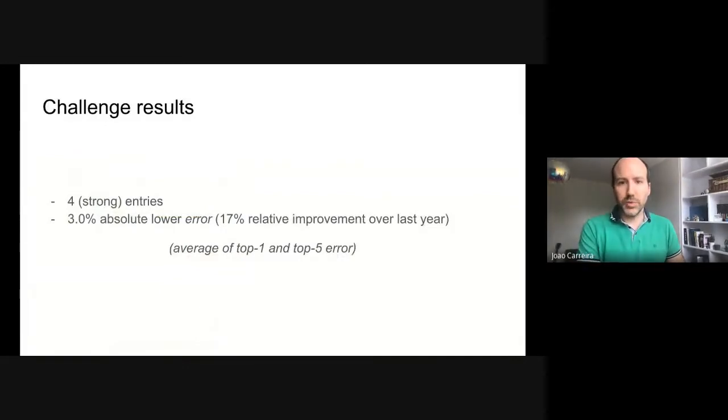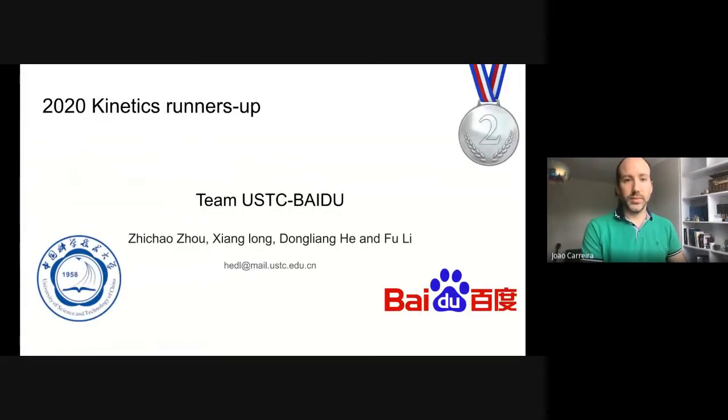I strongly encourage everyone to check the task C session of the workshop later on to date. Without further ado, let us move to present the challenge results. We have only four entries this year, but they were quite good. Overall, they achieved 3% lower absolute error. Here I'm talking about the average of top 1 and top 5 error. This represents a 17% relative improvement over last year, which was already quite strong. And here it comes. The runners-up this year is the team led by Dong Liang from the University of Science and Technology of China. They obtained amazing results. Congratulations to them.